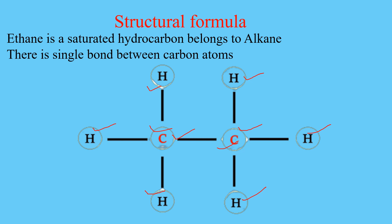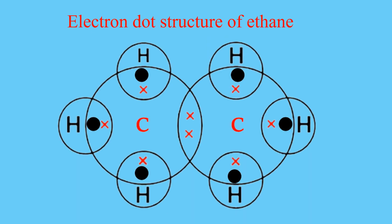On the basis of the structural formula, we will draw the electron dot structure. This is the electron dot structure of ethane, where the carbon atoms share one electron each with each other. These are the electrons, and carbon and hydrogen also share one electron each. This is the electron dot structure of ethane.